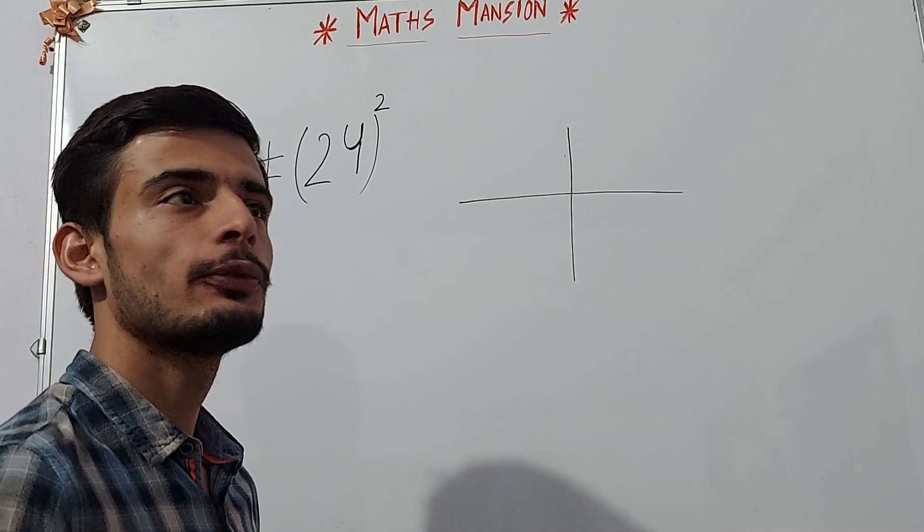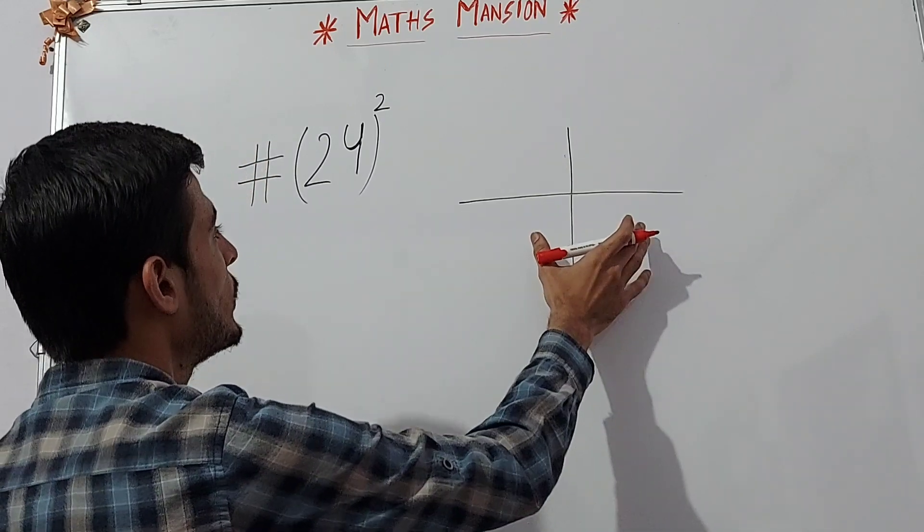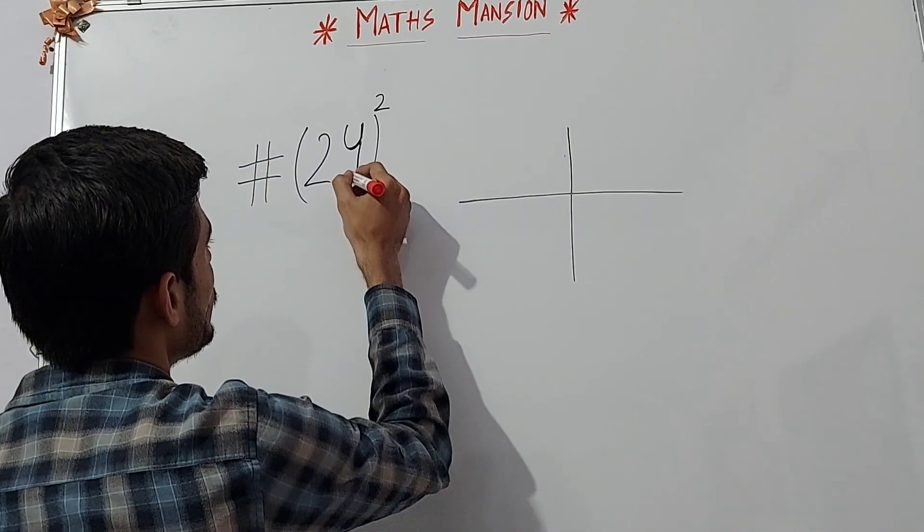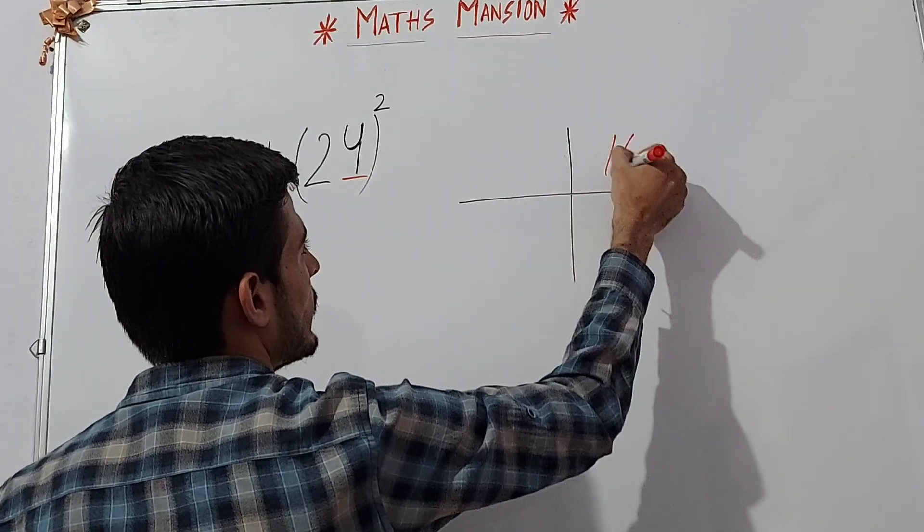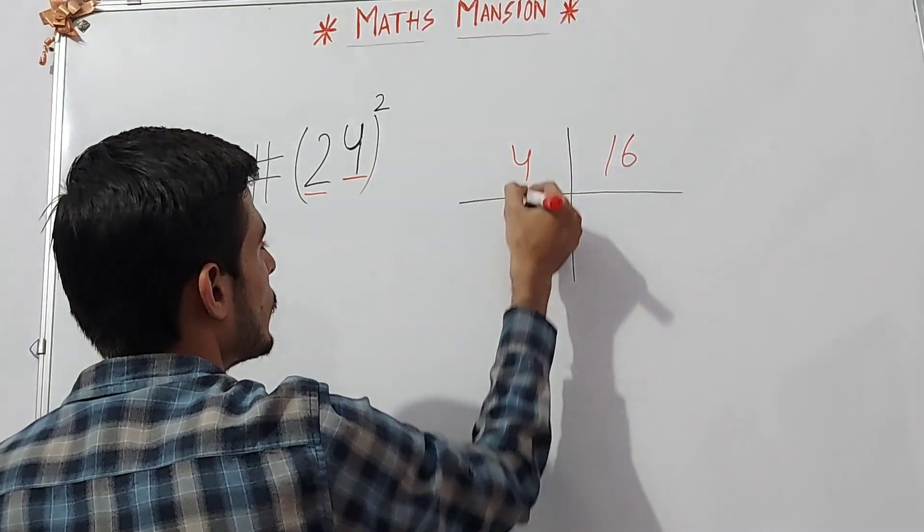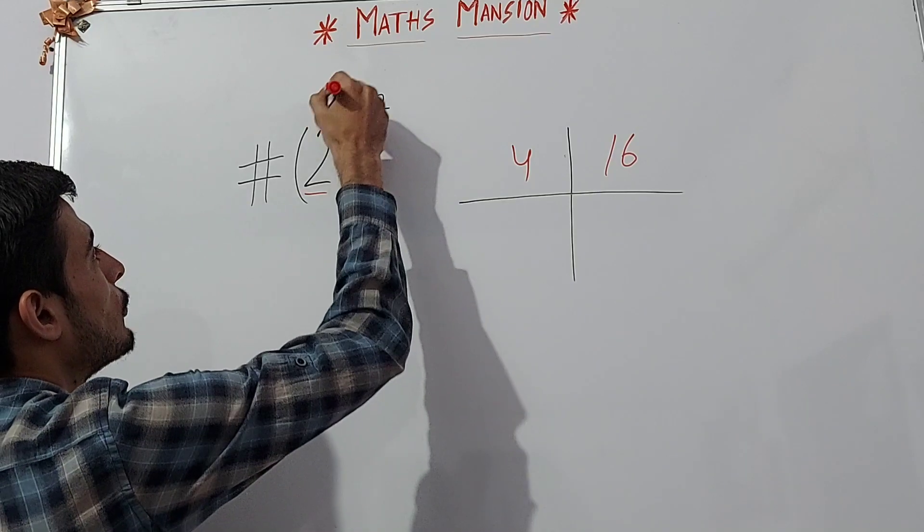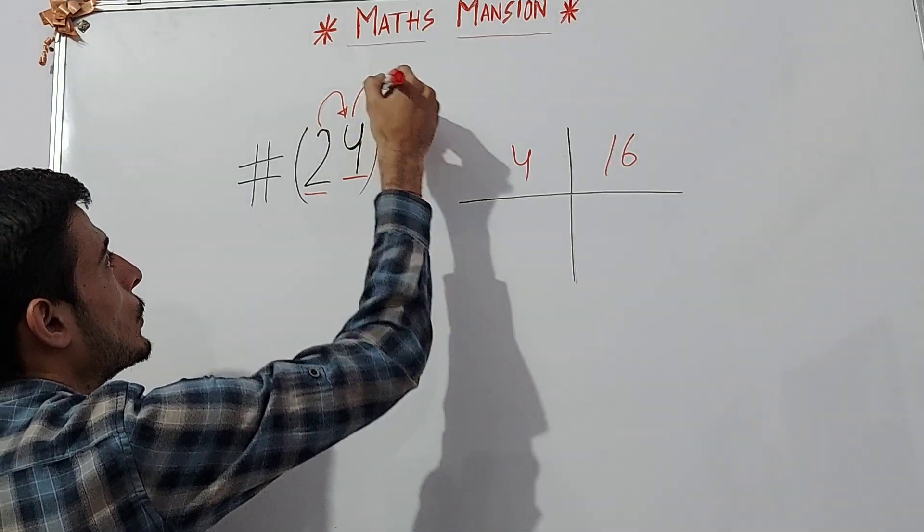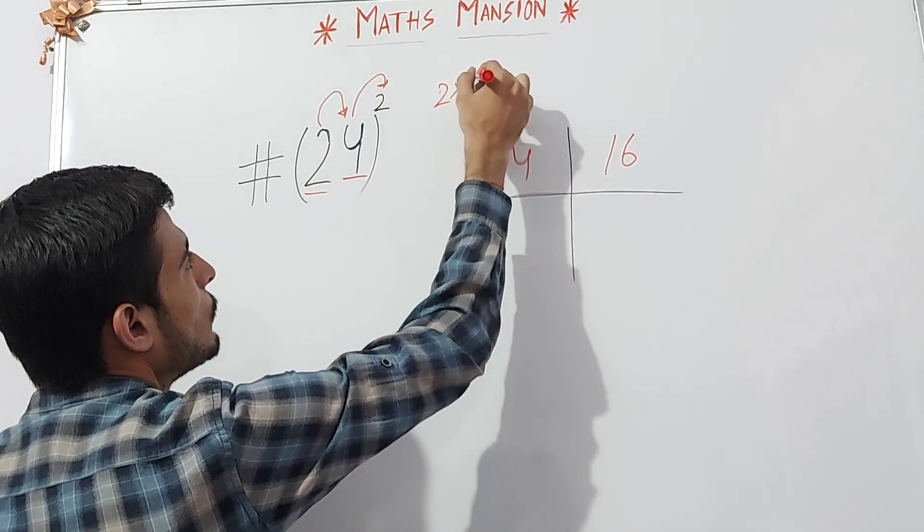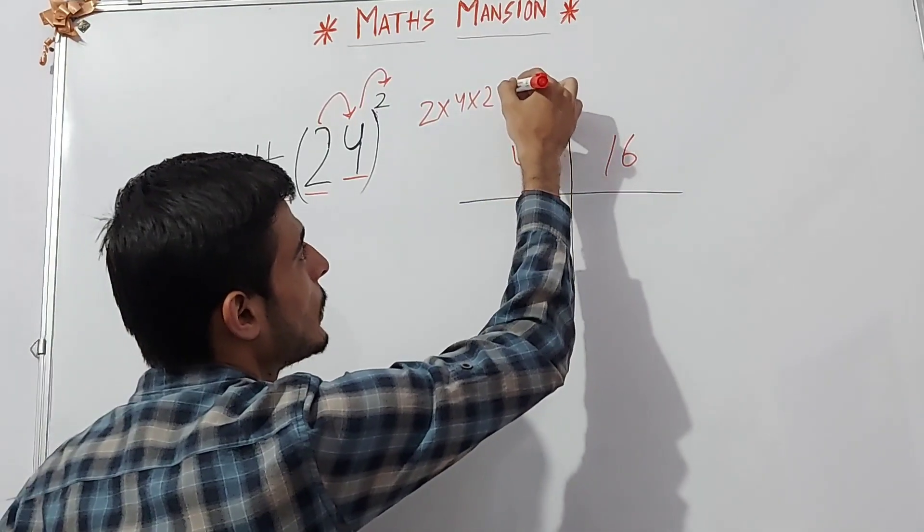If we have to find the square of 24, then again draw two intersecting lines and write the square of 4 in the first column and write the square of 2 in the second column. Now multiply 2 with 4 and with 2, that is 2 into 4 into 2 which equals 16.